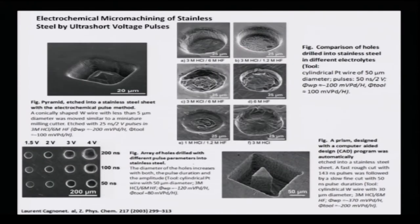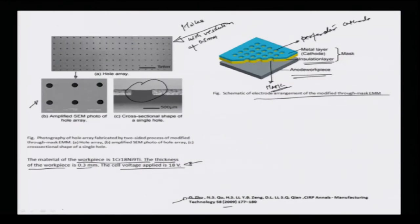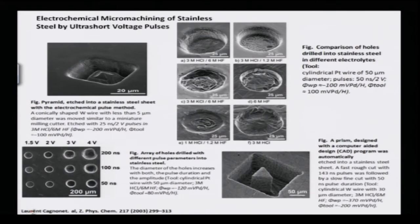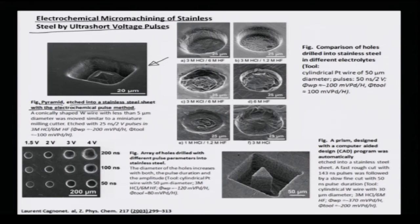Another example from Lawrence Krupp, reported in 2003, discusses electrochemical micro machining of stainless steels by ultra-short voltage pulses. The figure shows an SEM image of a pyramid etched into a stainless steel sheet using the electrochemical pulse method — it has a conical shape. In this case, a tungsten wire with less than 5 microns diameter was moved similar to a milling cutter.